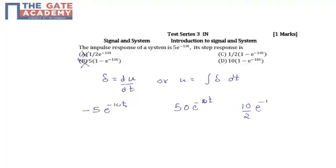This is 5e^(-10t), which matches the given impulse response. So our answer is option C. Thank you.